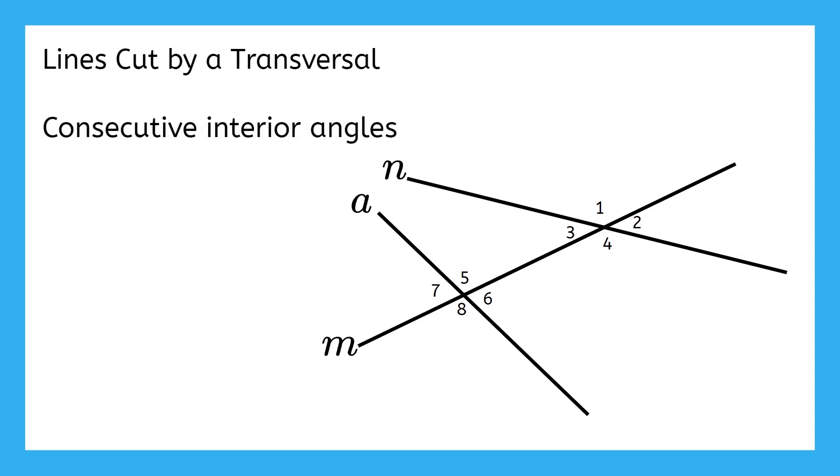Next up is a pair called consecutive interior angles. Try to use context clues to make a prediction about what this angle pair might look like. Hopefully, you noticed that we're still talking about interior angles, so it must only involve angles 3, 4, 5, and 6 again. Then, there's consecutive. That word means in a row or following after.